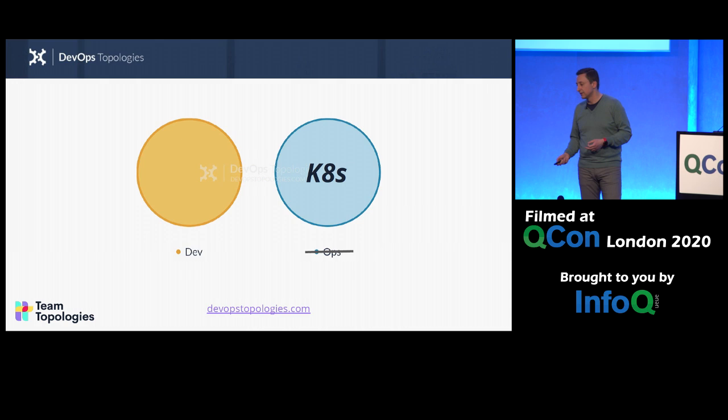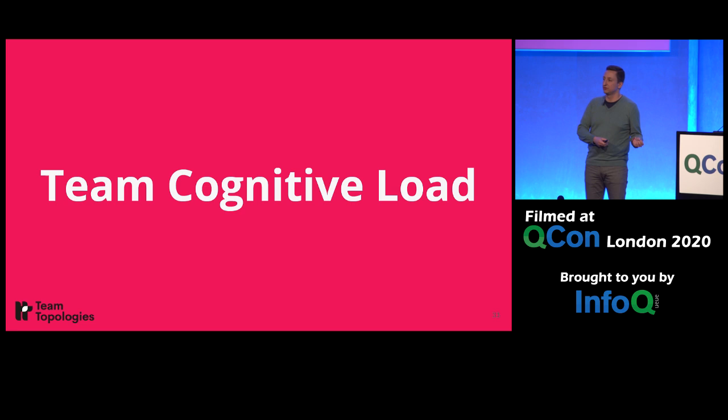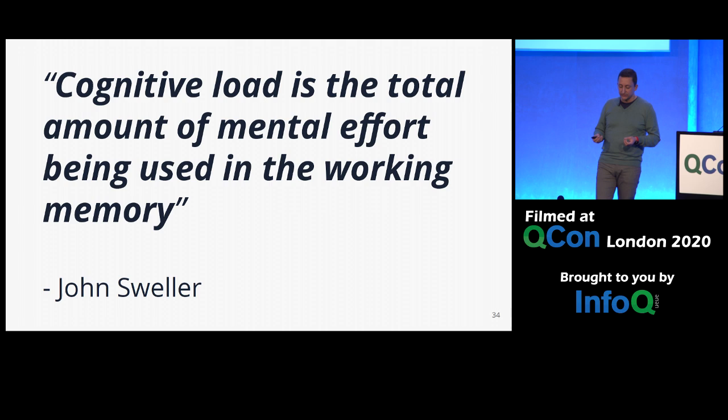One of the reasons this goes wrong is that making decisions without considering the impact on consumers is going to increase their cognitive load — the amount of effort for the teams to actually be able to use the platform. Cognitive load has a specific definition from John Sweller as the total amount of mental effort being used in the working memory, and we can break this down into three different types.